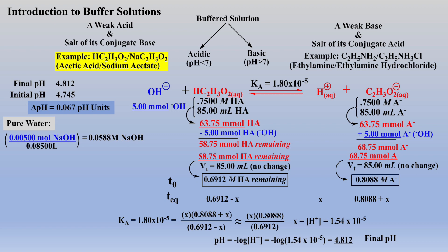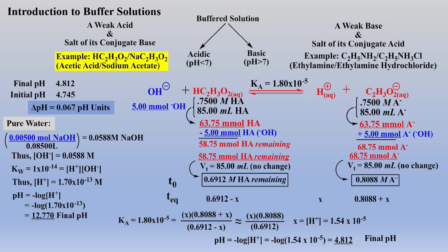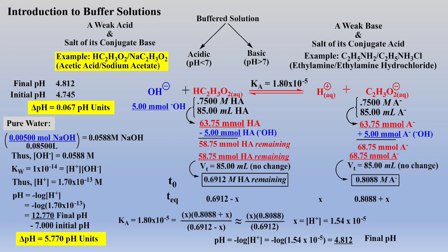Placing the same amount of sodium hydroxide in the same amount of pure water affords a 0.0588 molar solution of sodium hydroxide, which is the same concentration of hydroxide ions, which can then be converted to a proton concentration via the Kw definition. The proton concentration yields the final pH of the solution. The pure water had an initial pH of 7, which is now subtracted from the final pH after base was added, and we see that the change in pH units is substantial when compared to a buffer solution, which proves our buffer solution resists change in pH when either a base or acid is added.